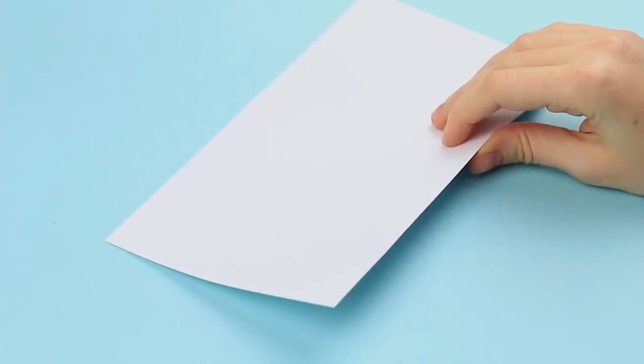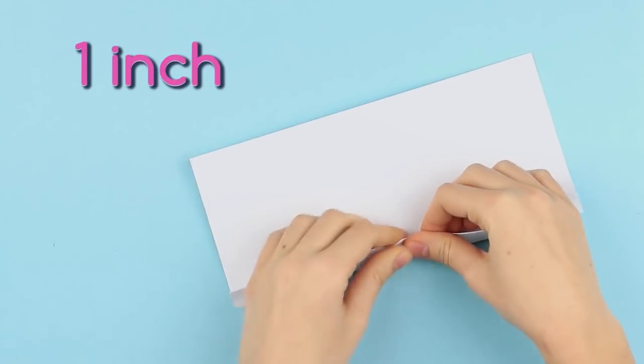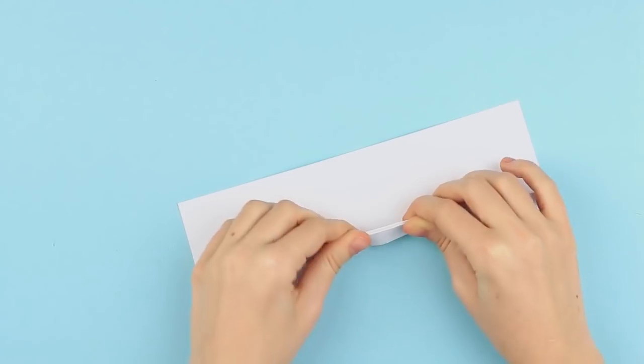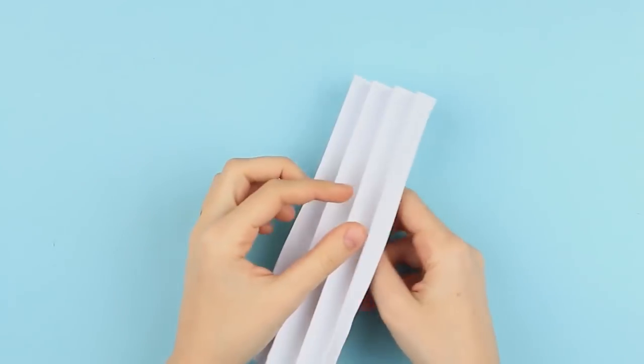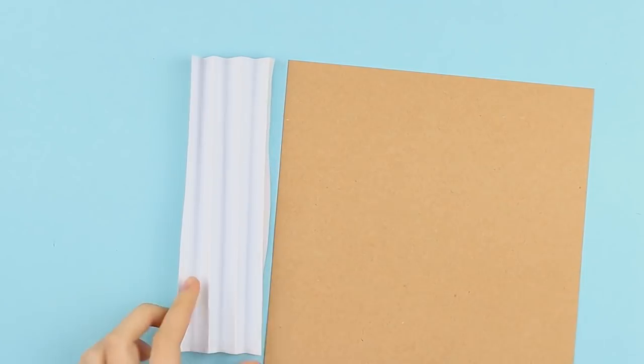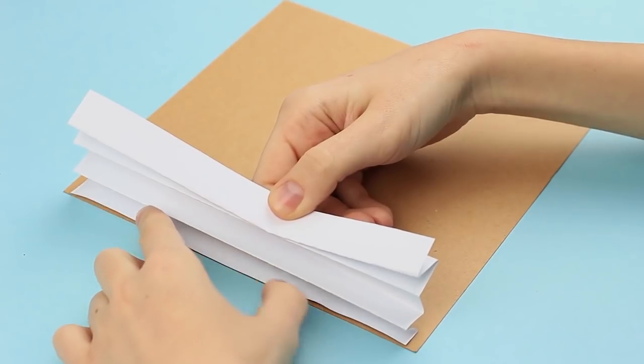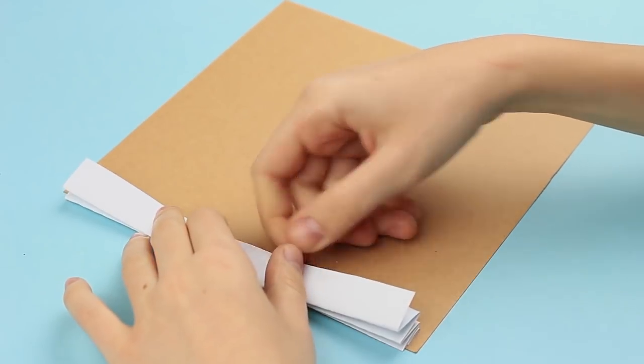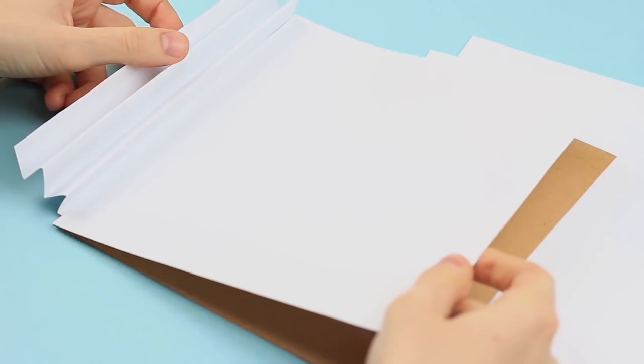Now let's make the inner part of the scrapbook. Fold a piece of paper accordion style. The pleat width is about 1 inch. Let's attach the folded paper to the back side of the cover. Add white glue across the edge. Attach the accordion. Glue the pleats to attach the pages. You can make as many pages as you like.